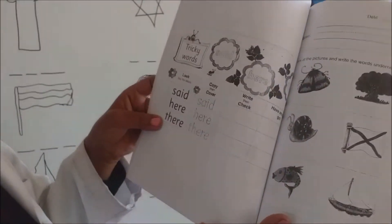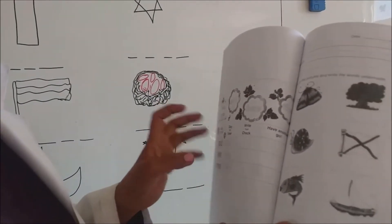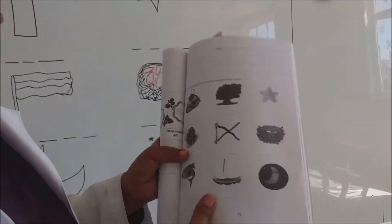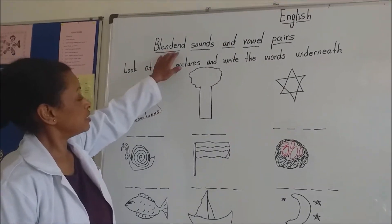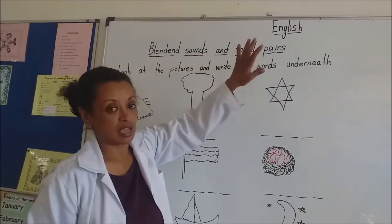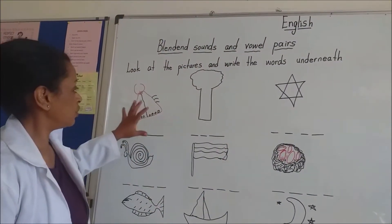Read it again and again. Practice, practice, practice. Practice makes perfect. Excellent. Let's do this now. We have blended sounds and vowel pairs. I'm going to show you that with the pictures.